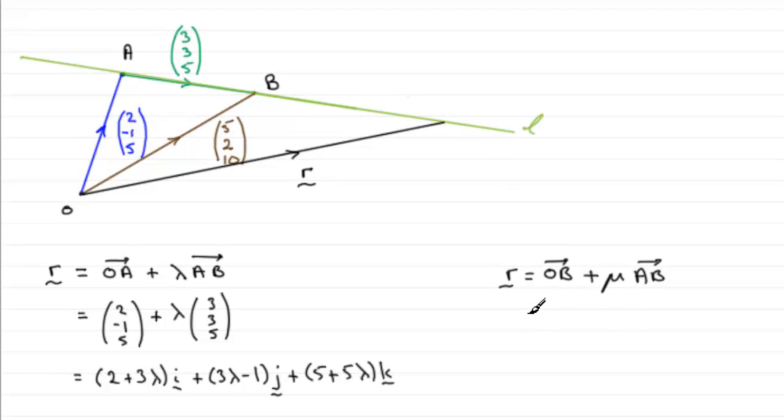And if you're using this one, similarly you could go from O to B then, which would be 5, 2, 10, 5, 2, 10, followed by any amount in the direction A to B, which would be 3, 3, 5.